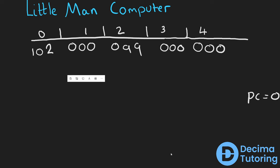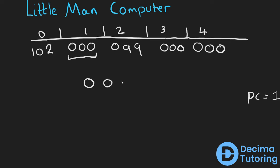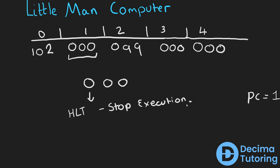The program counter was also incremented from zero to one, which means during the next fetch cycle we fetched the value 000 from RAM at memory location one. The instruction 000 is special: if there is a zero here, this is the halt instruction, which means stop execution. The program was complete.